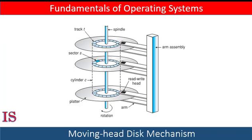If the head touches the surface of the platter, we have a problem. The heads are attached to a disk arm that moves all heads as a unit. The surface of a platter is logically divided into circular tracks, which are subdivided into sectors. All heads move together from the outermost tracks to the innermost tracks and vice versa. The set of tracks at a given arm position makes up a cylinder. There may be thousands of concentric cylinders in one disk drive, and each track may contain hundreds of sectors. Each sector has a fixed size and is the smallest unit of transfer.